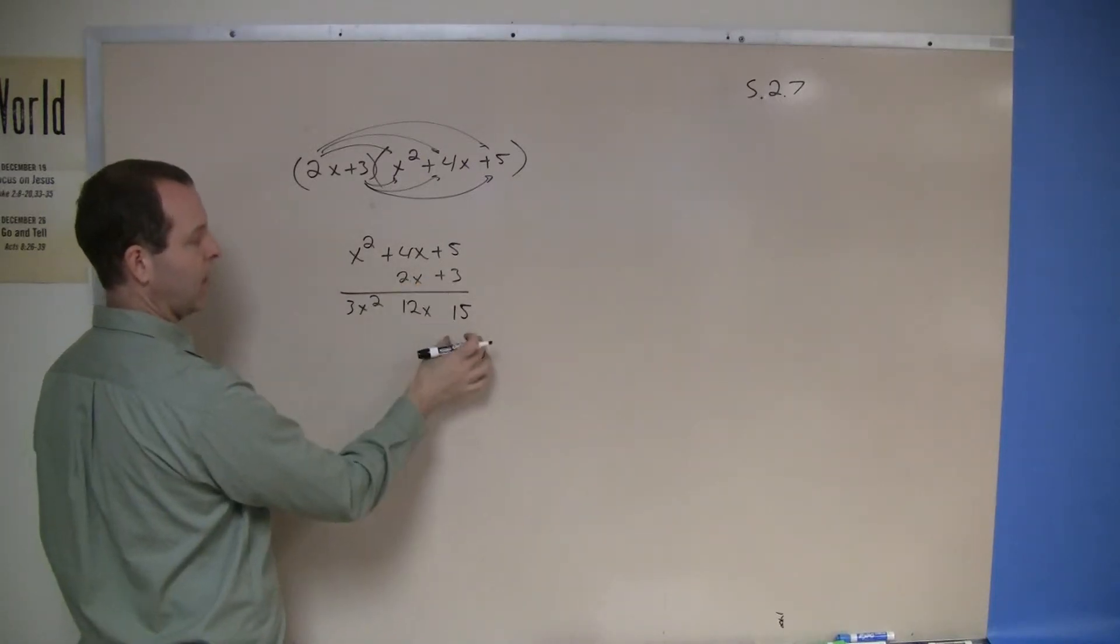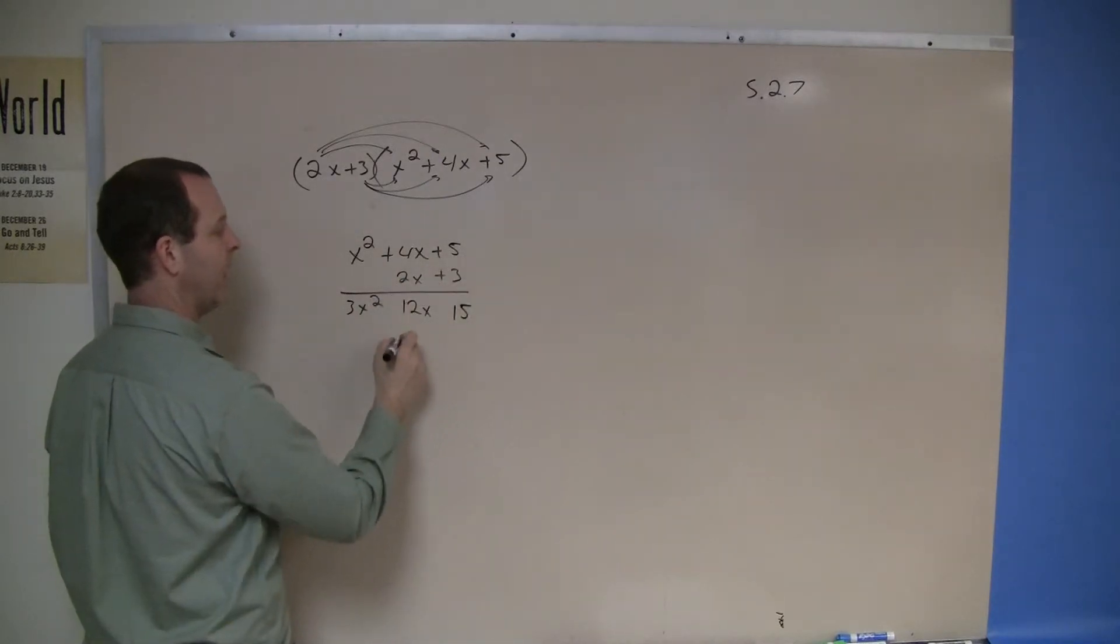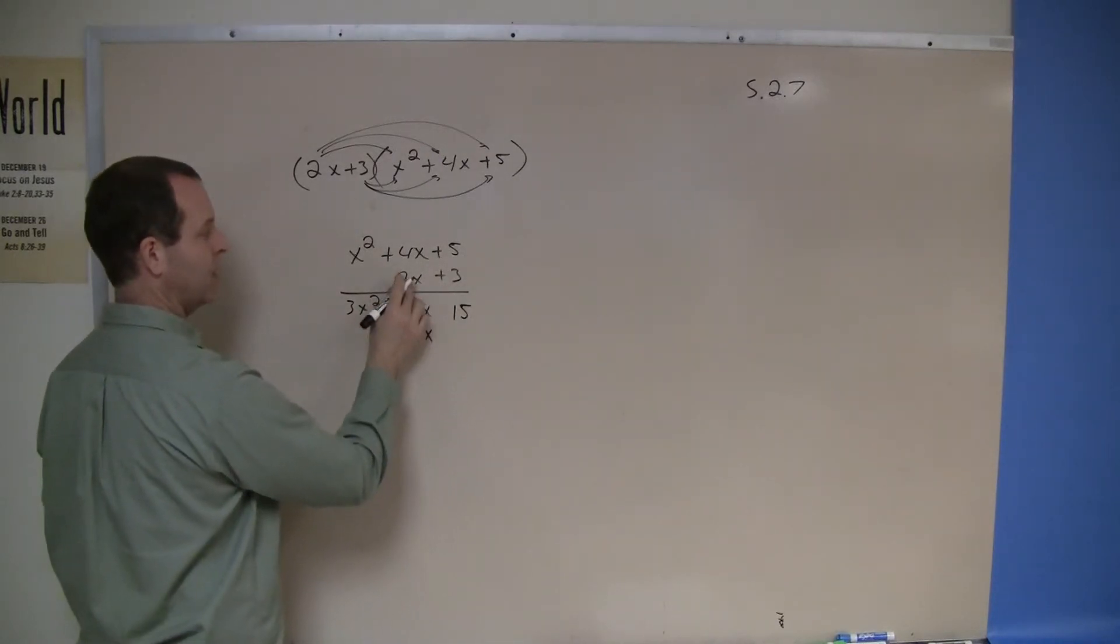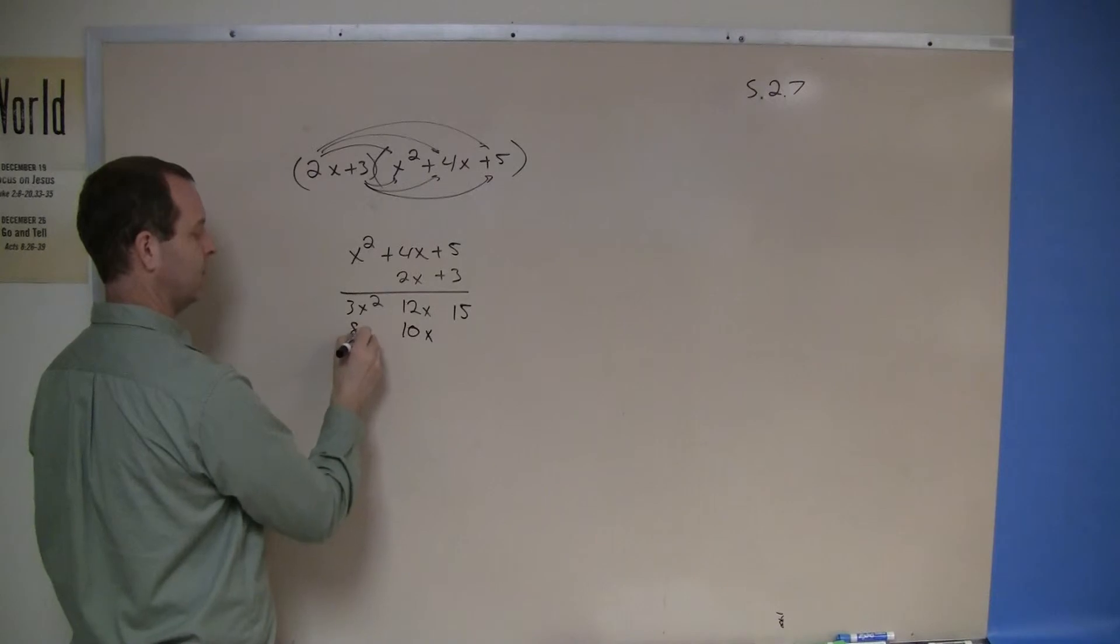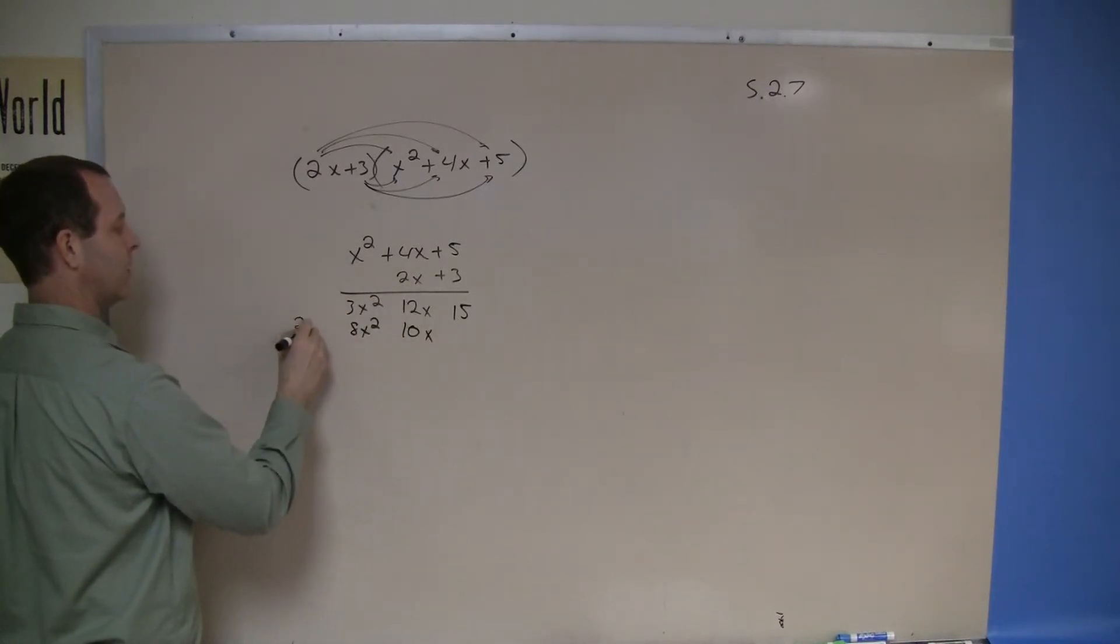The next line starts with this 2x, so I skip that first spot and bounce over. 2x times 5, 10x. 2x times 4x, 8x squared. And 2x times an x squared is 2x cubed.